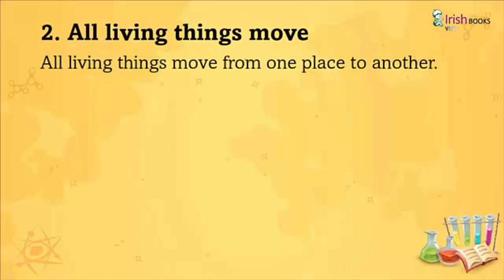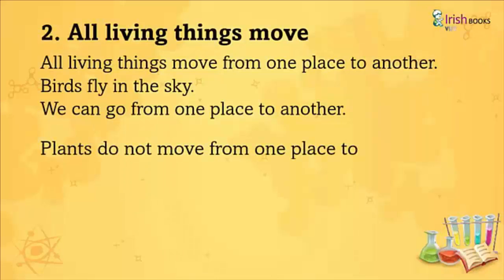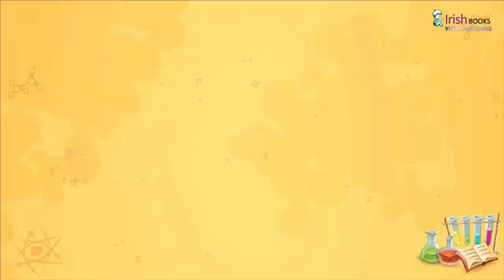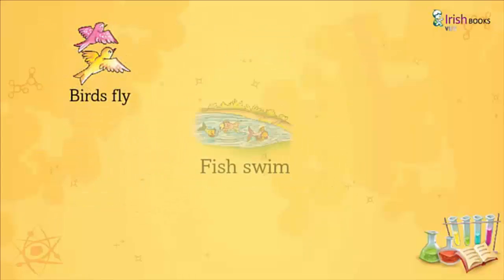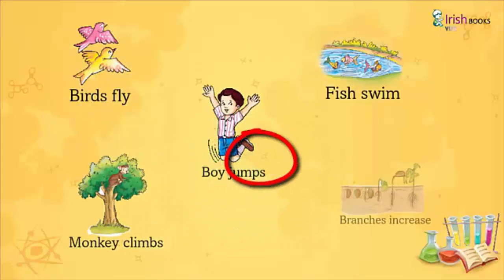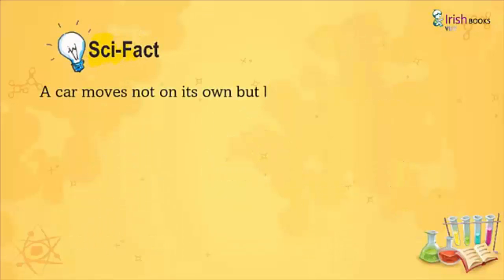All living things move from one place to another. Birds fly in the sky. We can go from one place to another. Plants do not move from one place to another, but they show movement in their parts. Birds fly, fish swim, a boy jumps, a monkey climbs, and branches move. Science fact: A car moves not on its own but because of machine power.